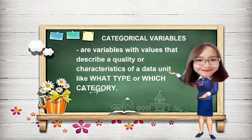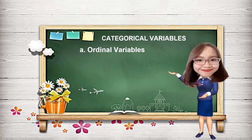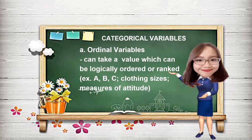The second classification of variables is categorical variables. These are variables with values that describe a quality or characteristic of a data unit, like 'what type' or 'which category.' Ordinal variables are under categorical variables — these variables can take a value which can be logically ordered or ranked. Some examples are academic grades such as A, B, or C, clothing size such as small, medium, and large, and measures of attitudes like strongly agree, agree, disagree, or strongly disagree.